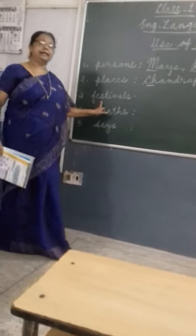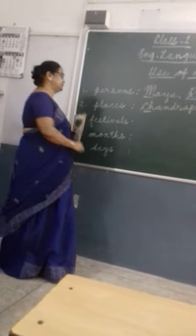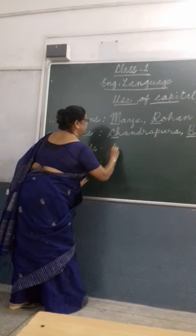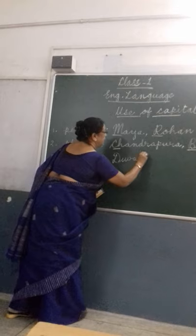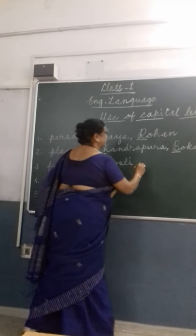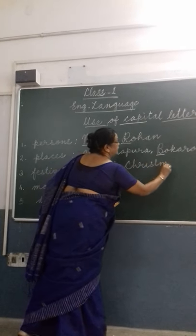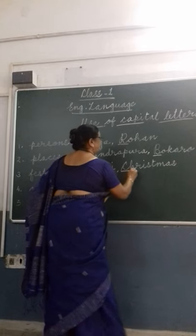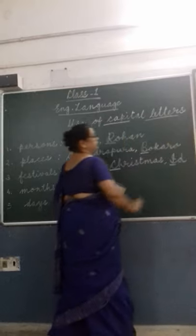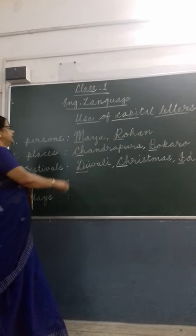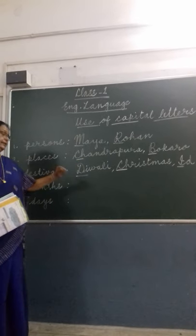Next, when we write the names of festivals — we celebrate many festivals. For example, Diwali: the first letter D should be capital. Then Christmas: C should be capital. Then Eid: the first letter should be capital. So whenever we write the name of a festival, the first letter should be in capital letter.